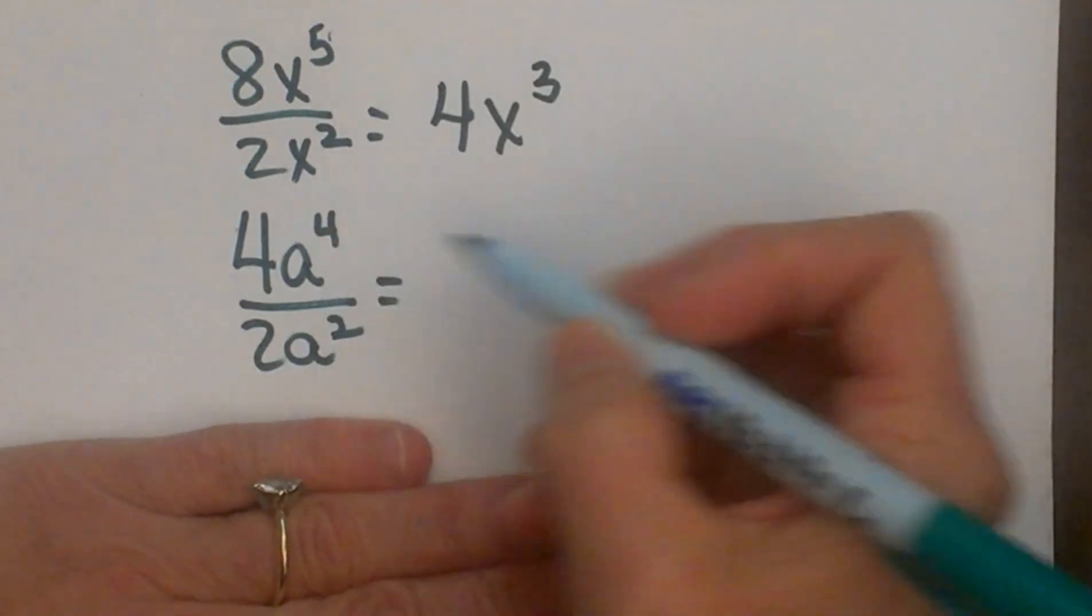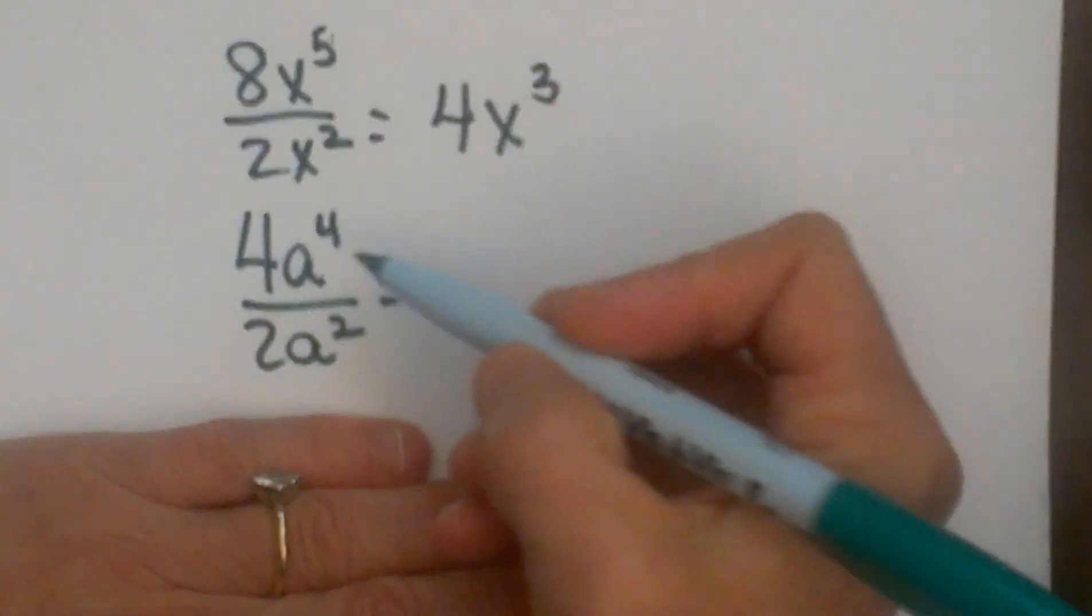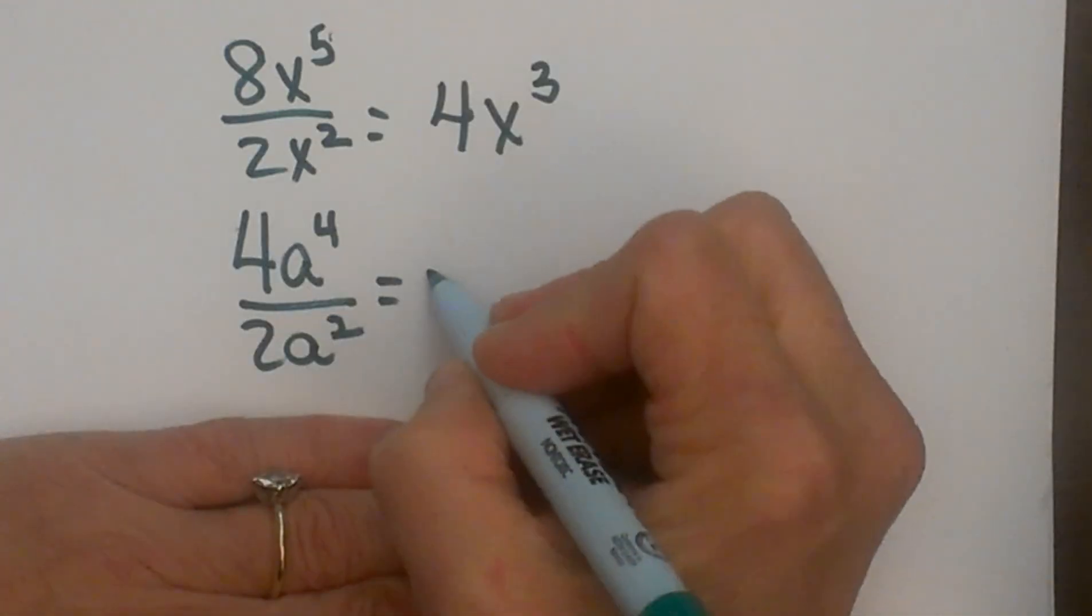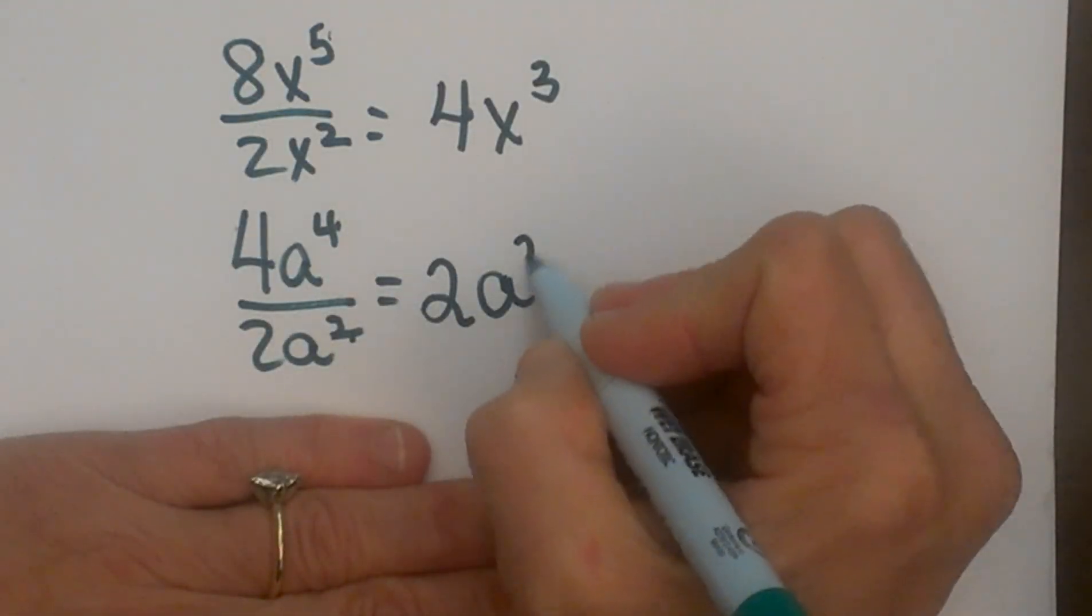Let's look at another one. 4a⁴ divided by 2a². Divide the coefficients, 2a to the—let's subtract the exponents—squared.